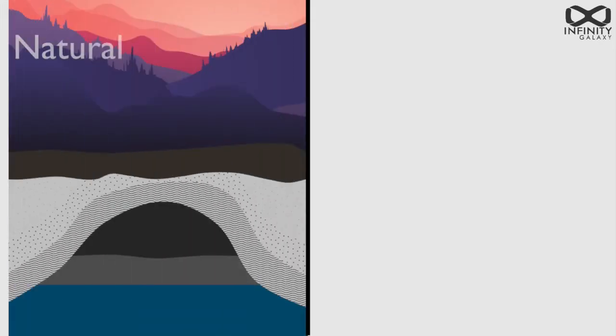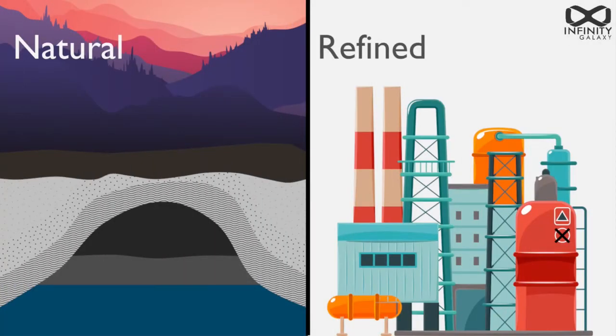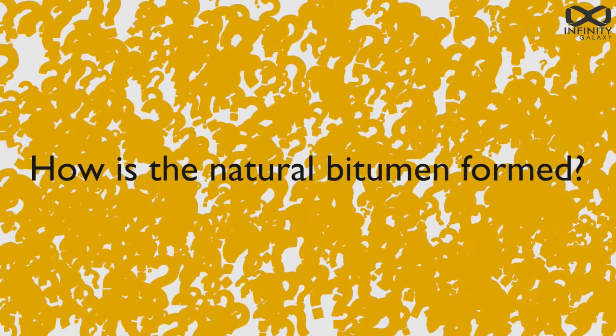In general, bitumen is divided into two categories: natural and refined. Here is the question, how is natural bitumen formed?